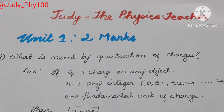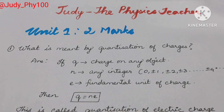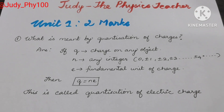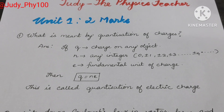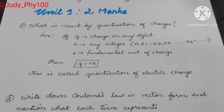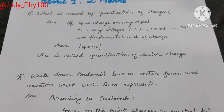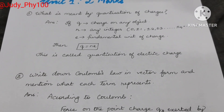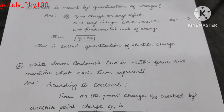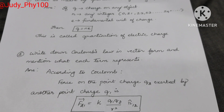Welcome students. Unit one electrostatics, lesson two — more question paper. First three question answers. First one: what is meant by quantization of charges? For a system, the charge on any object q equals n times e, where n is any integer — zero, plus or minus one, plus or minus two, and so on — and e is the fundamental unit of charge, which is the charge of an electron. This formula, q is equal to n into e, is called quantization of electric charge.